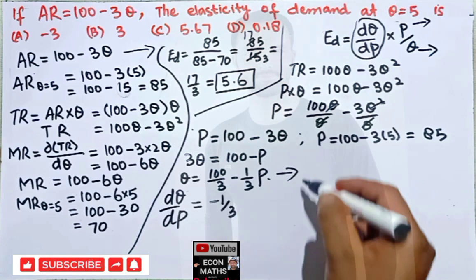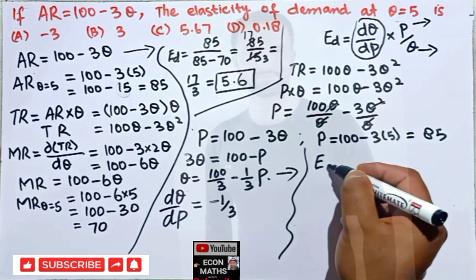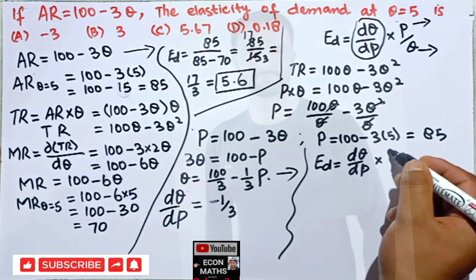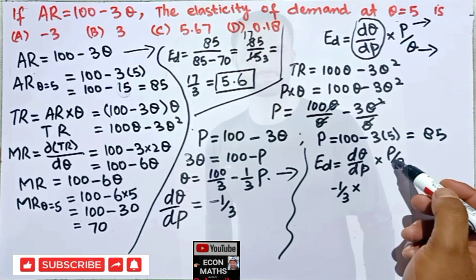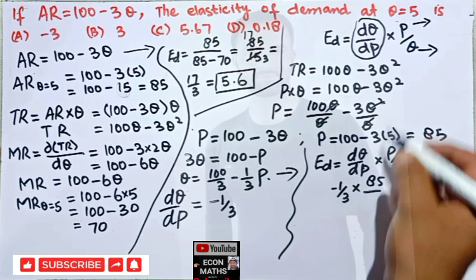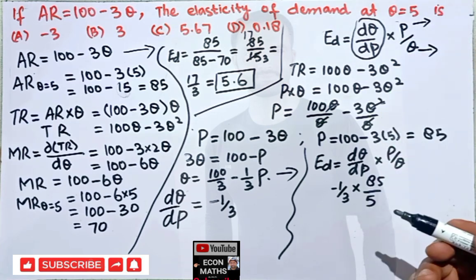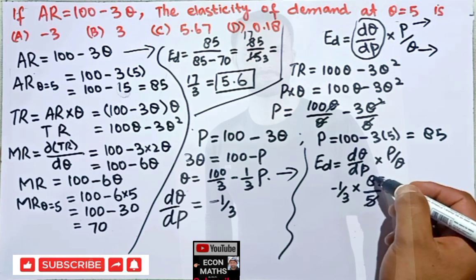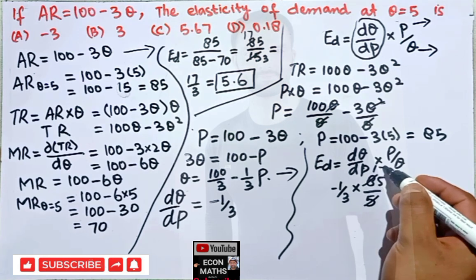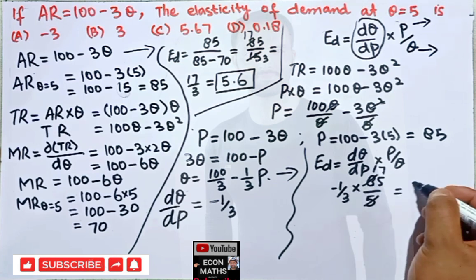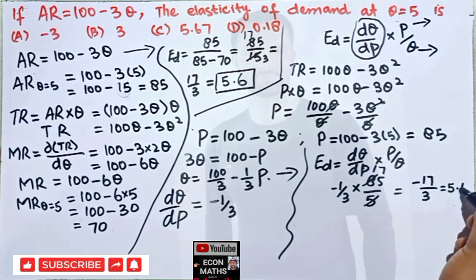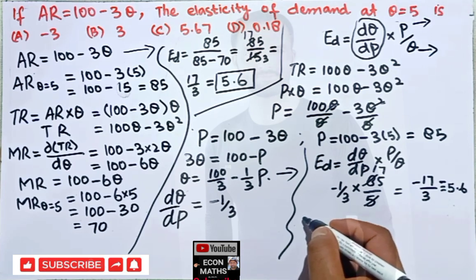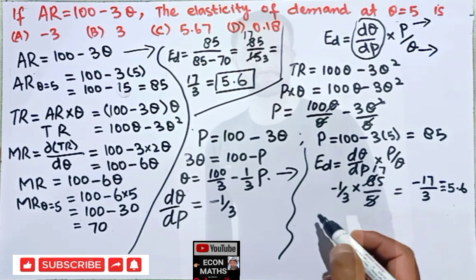Using the formula, elasticity of demand equals dQ/dP times P/Q. Inserting the values: dQ/dP equals minus 1/3, P equals 85, and Q equals 5. So elasticity equals minus 1/3 times 85/5, which is minus 1/3 times 17, giving us minus 17/3, which comes out to be minus 5.67.